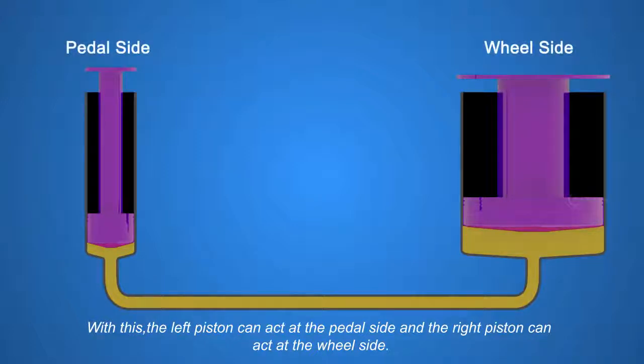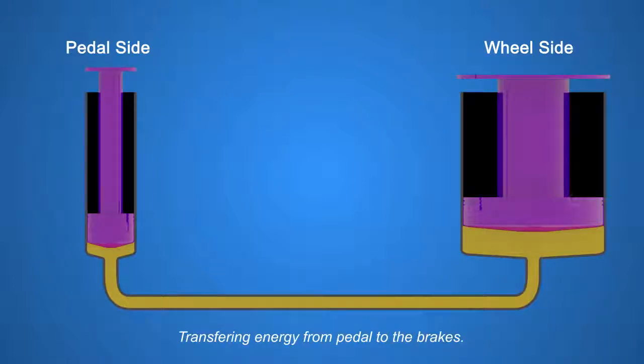With this, the left piston can act at the pedal side and the right piston can act at the wheel side, transferring energy from pedal to the brakes. Now we know the theory, let's see how this works in real.